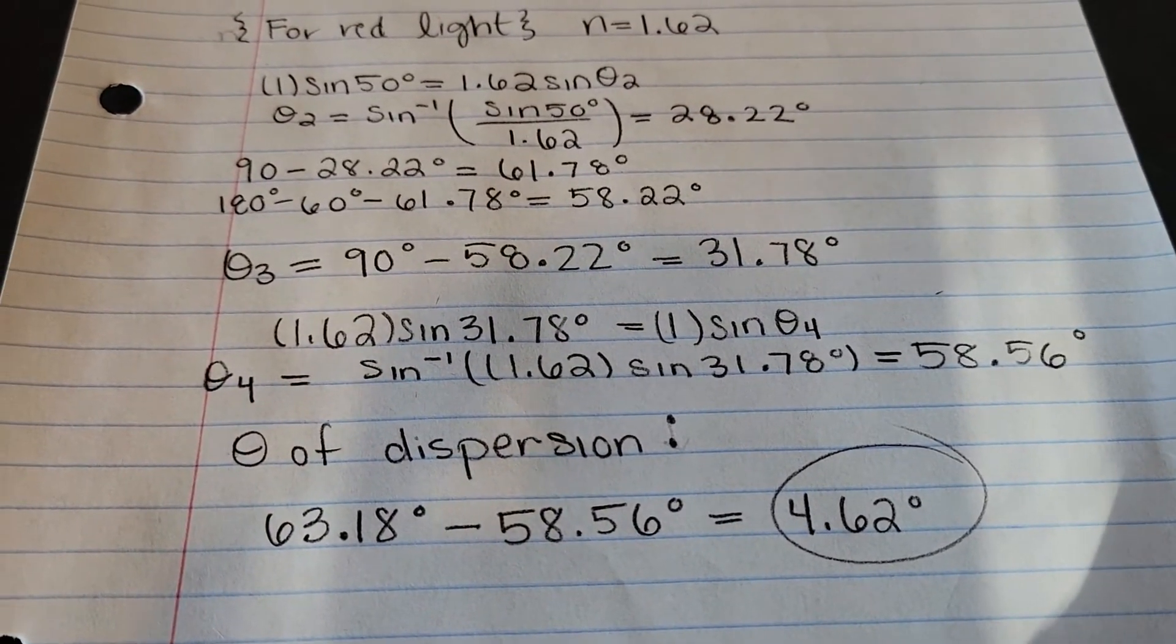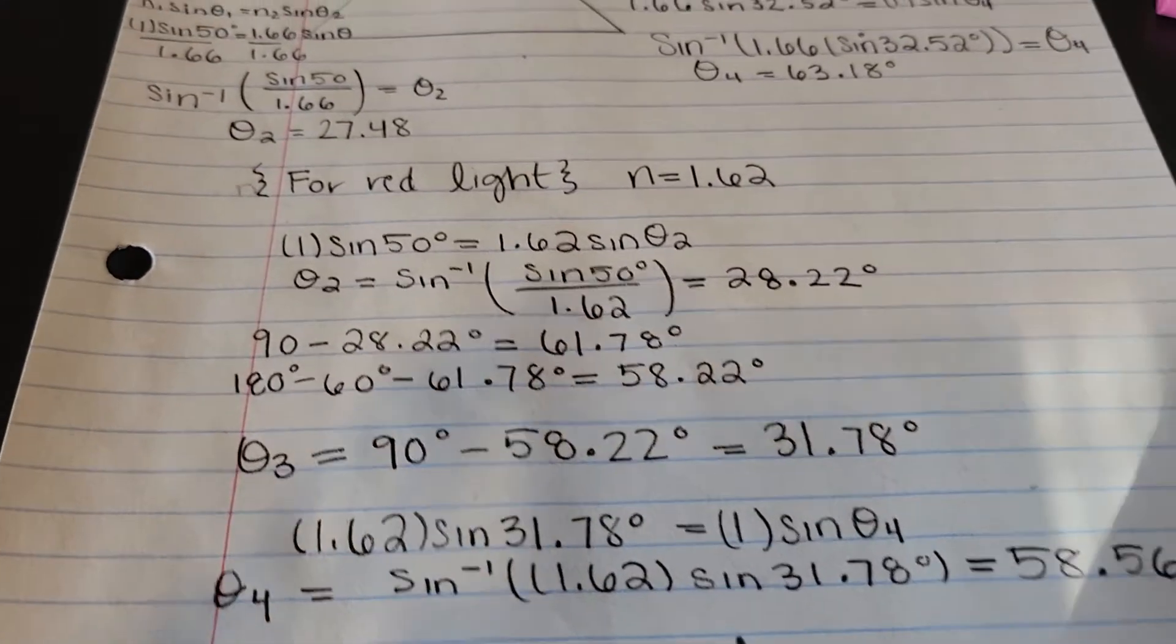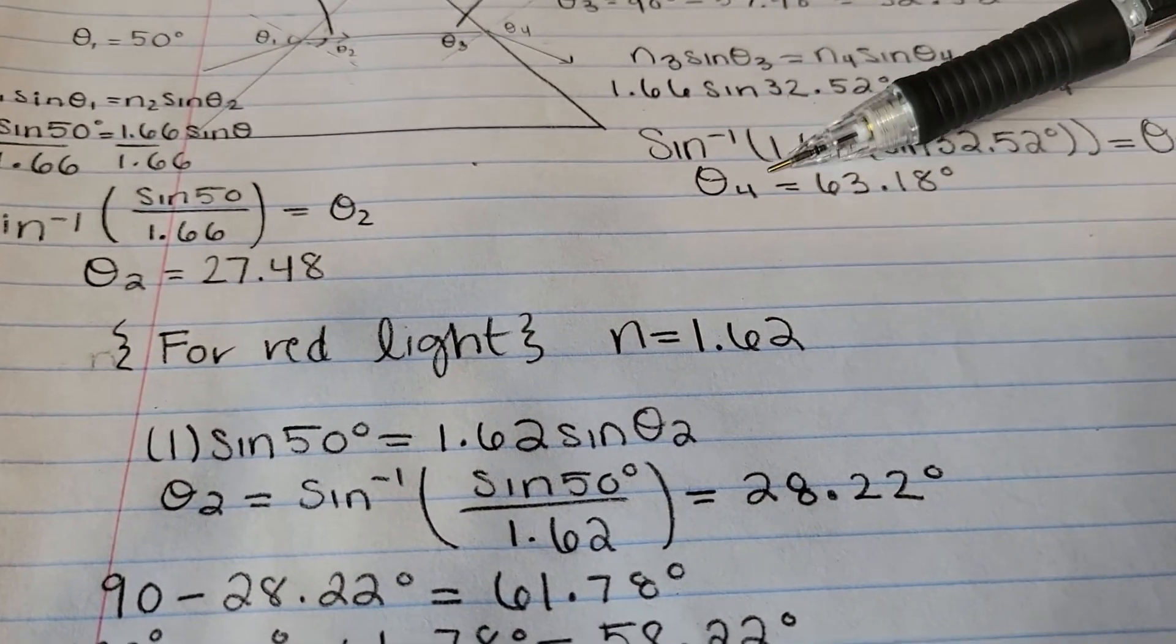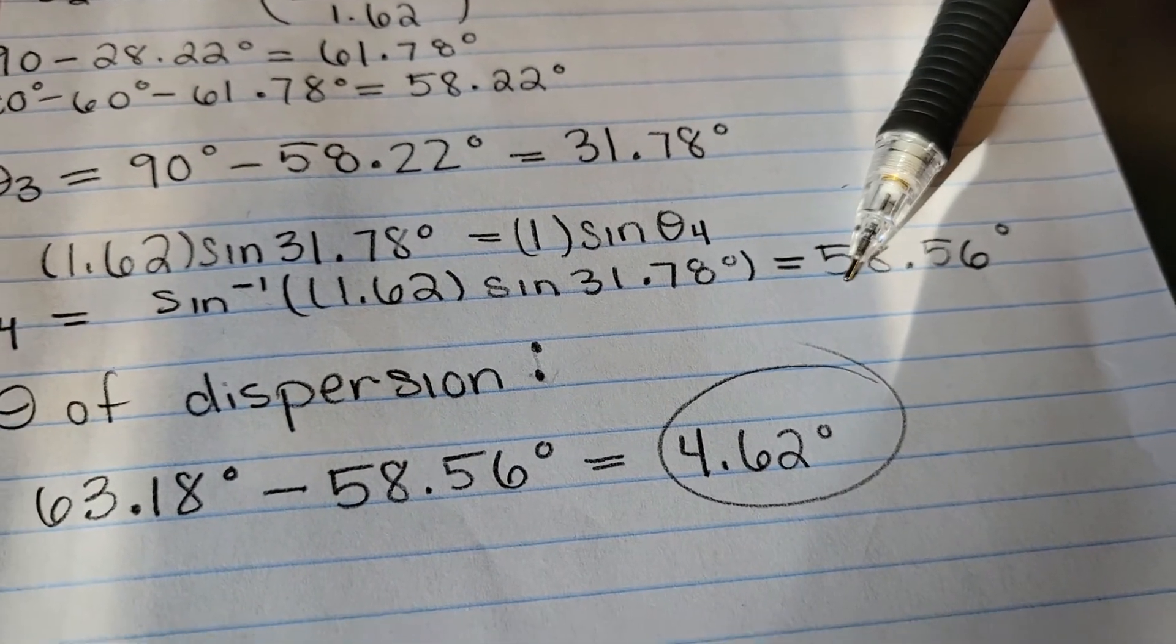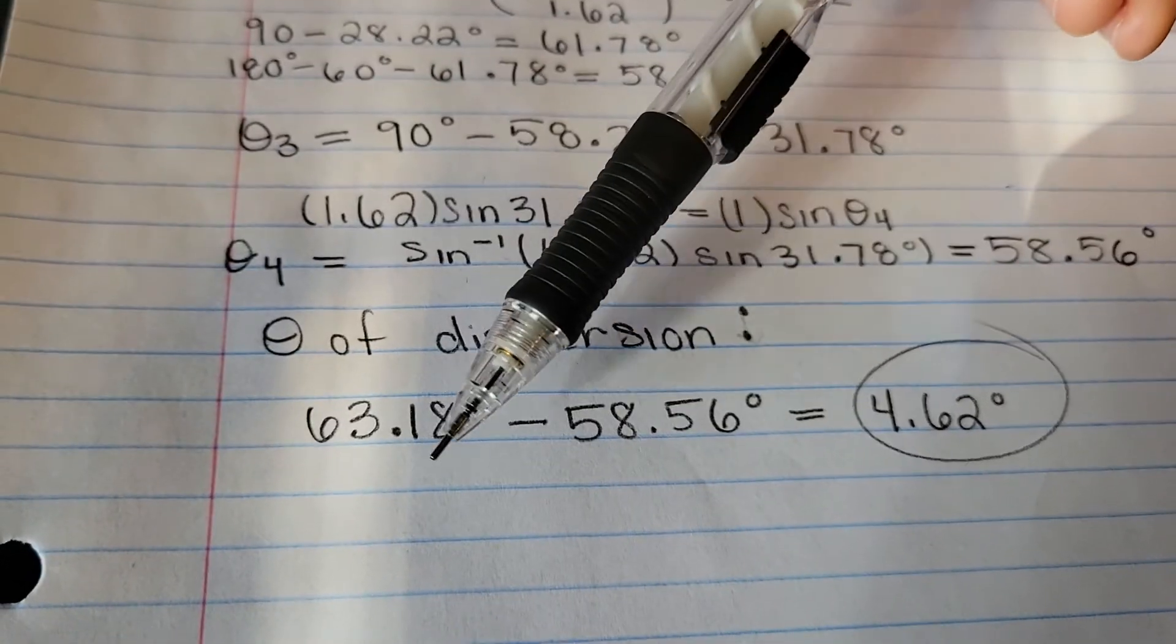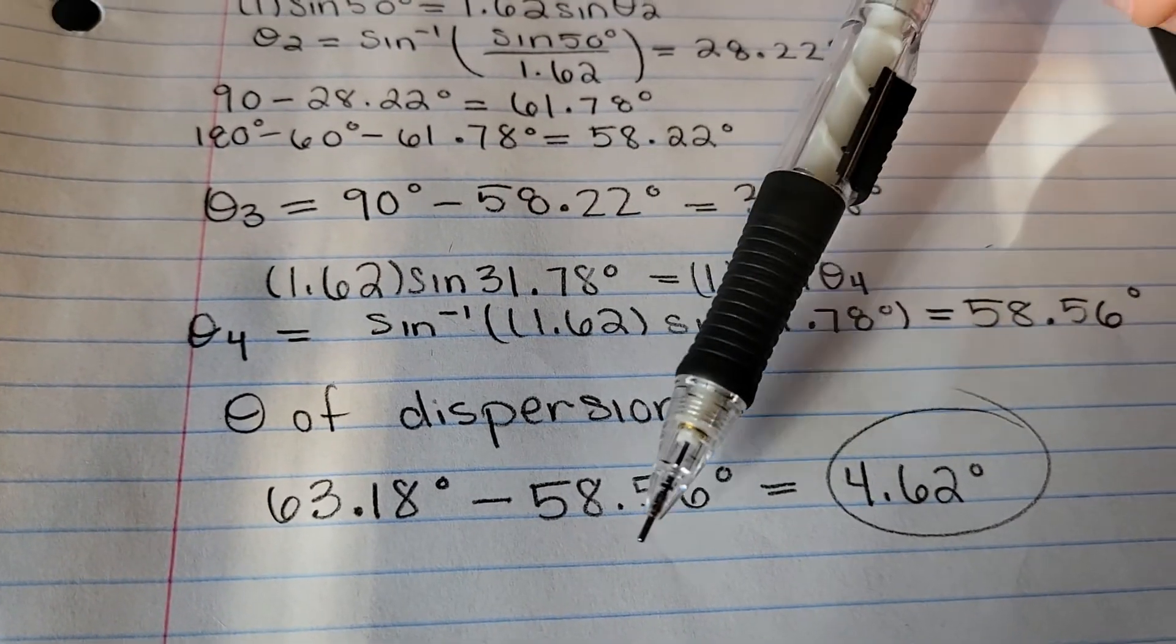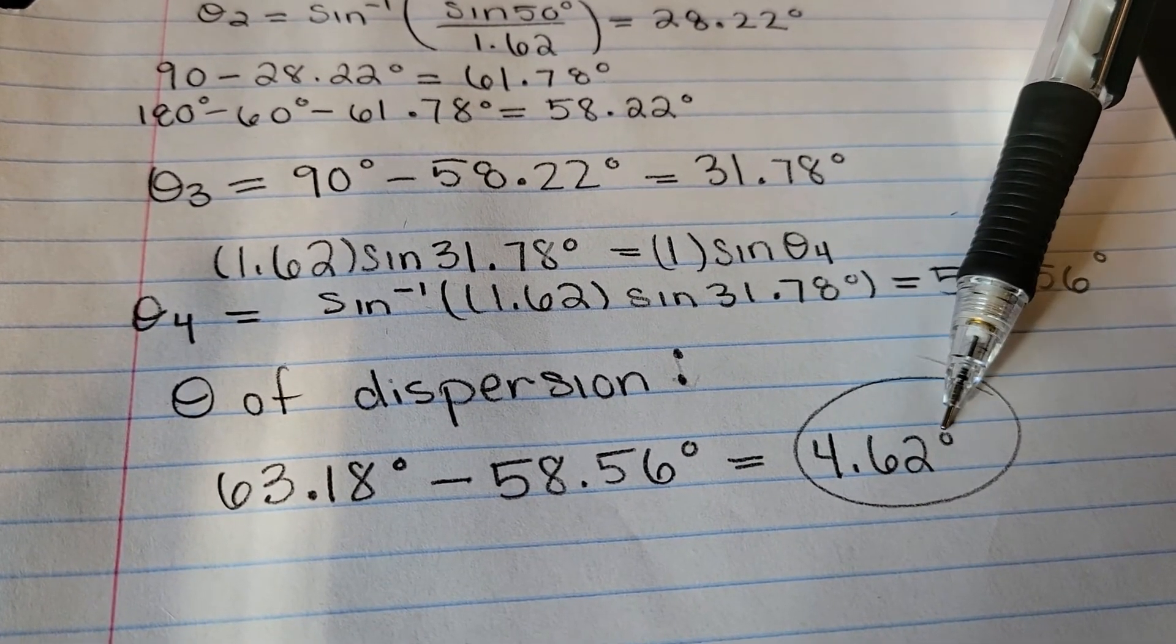To find the angle of dispersion, you have to take the difference of those two values. So you have to take theta 4 for violet light and theta 4 for red light. So 63.18 degrees minus 58.56 degrees. My angle of dispersion is 4.62 degrees.